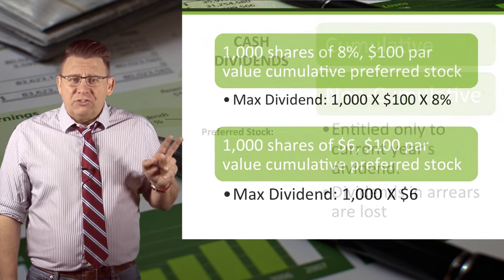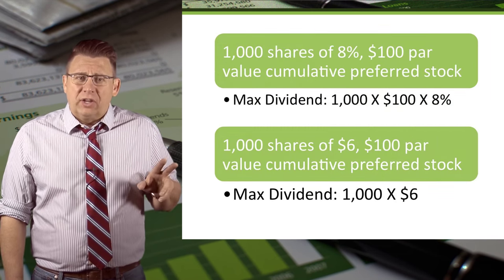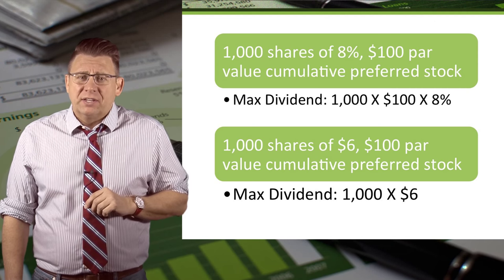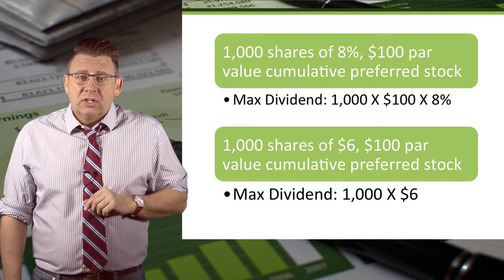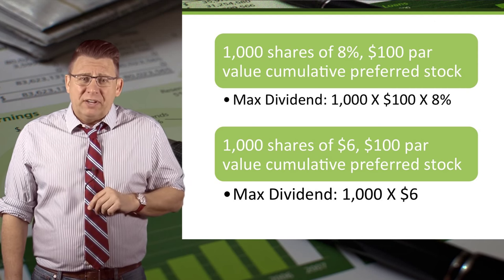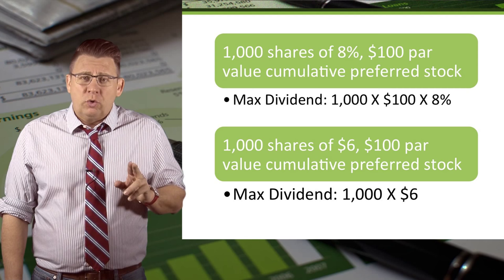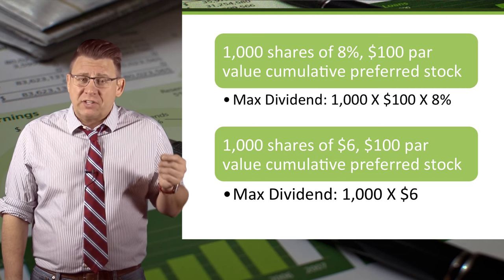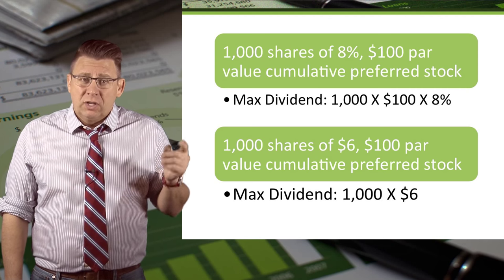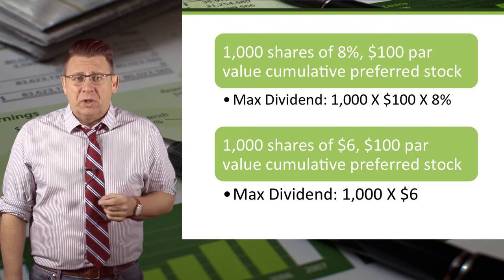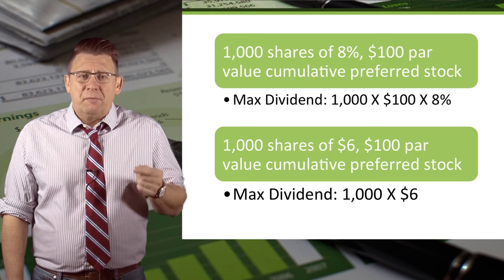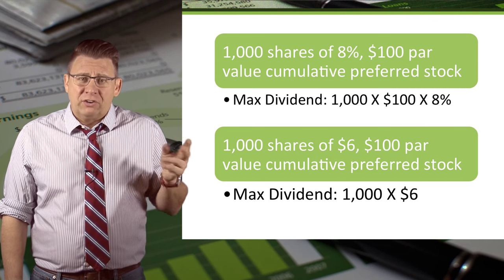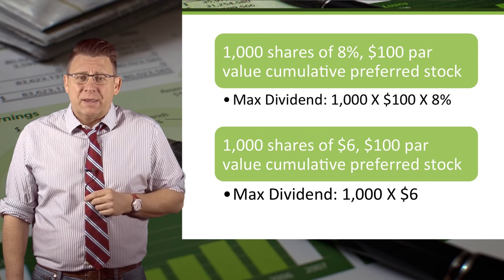This slide shows how to calculate the maximum preferred stock dividend. Generally, the maximum dividend is shown either as a percentage of the stock value, like the first example, or it lists the amount of dividend per share, as shown in the second example.